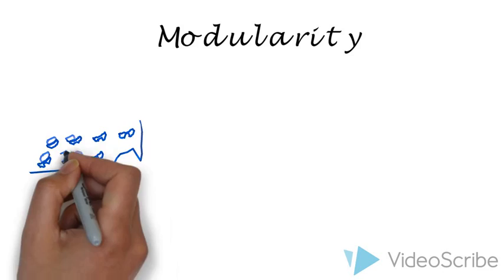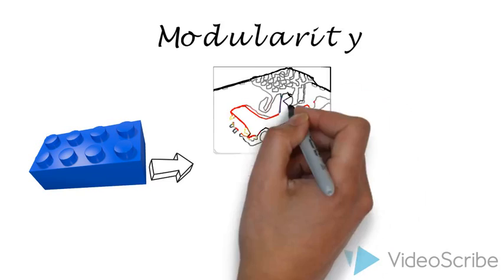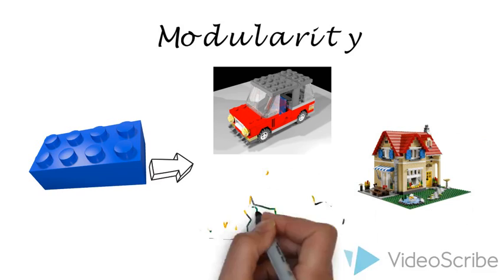What can you build using Legos? We can build car, house, dinosaur. Such large number of modules with different sizes, different shapes and different colors, a simple linkage system for snapping them together.